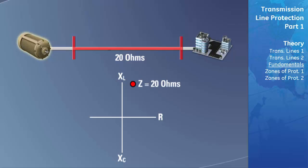If you were to draw a line from this point to the origin of the graph, you would have a representation of your entire transmission line. For example, plotting a point on the line midway between the origin and the end of the line would give an impedance of 10 ohms. This would also be the impedance of the midpoint of the transmission line.